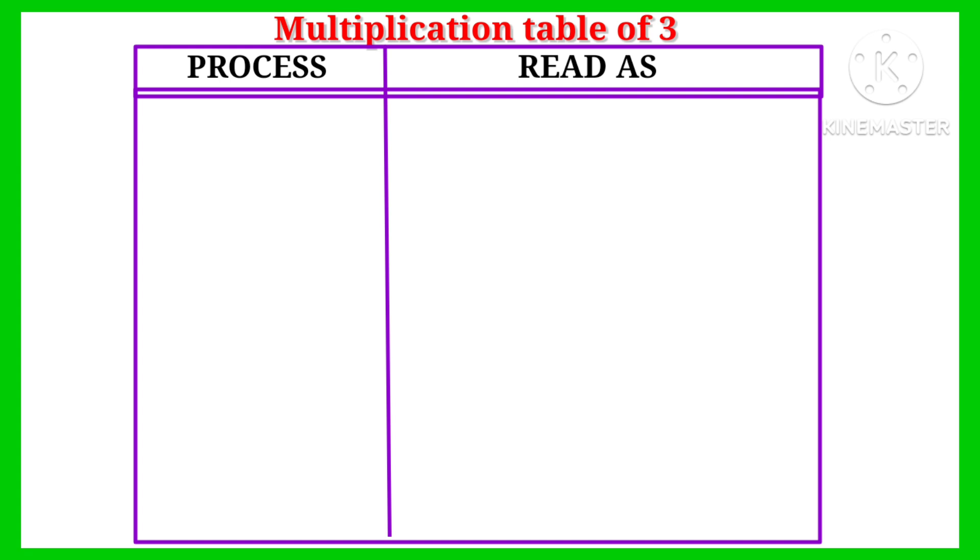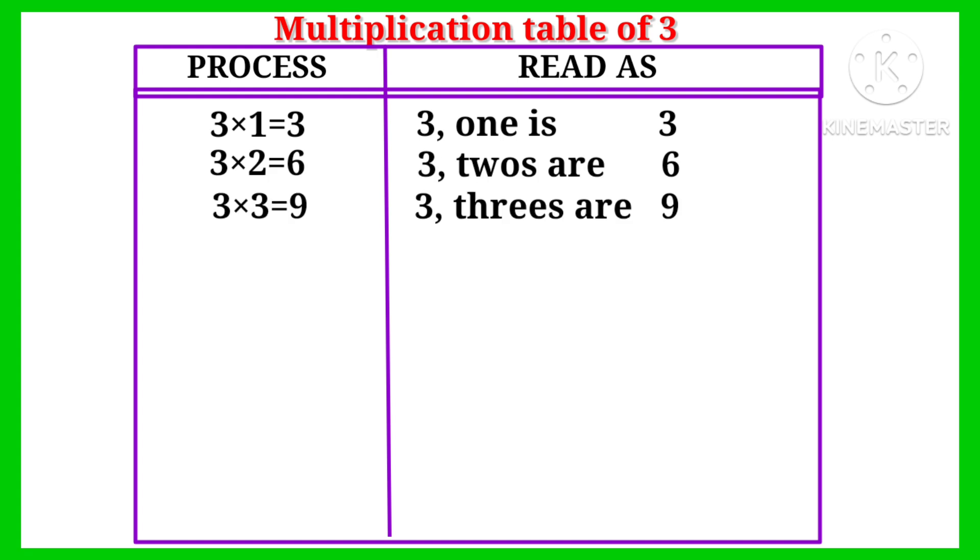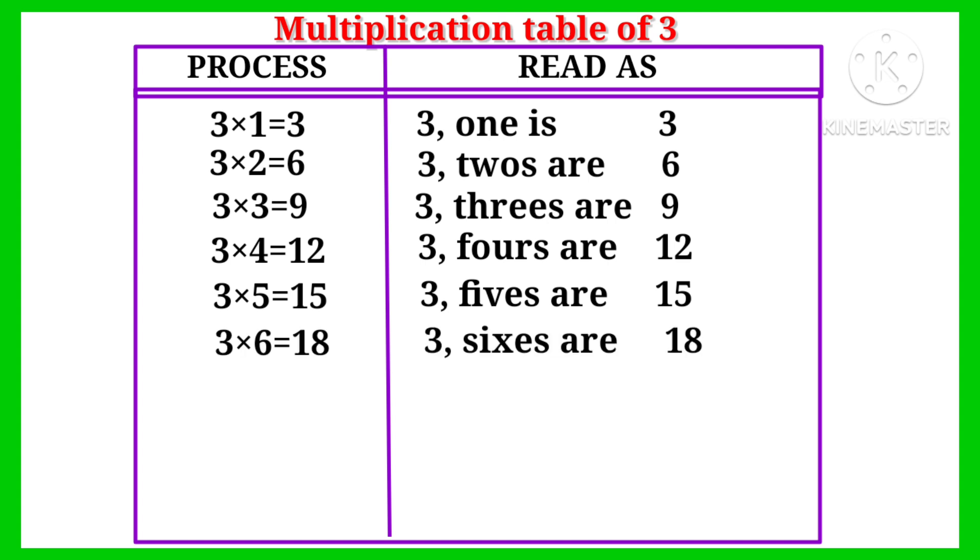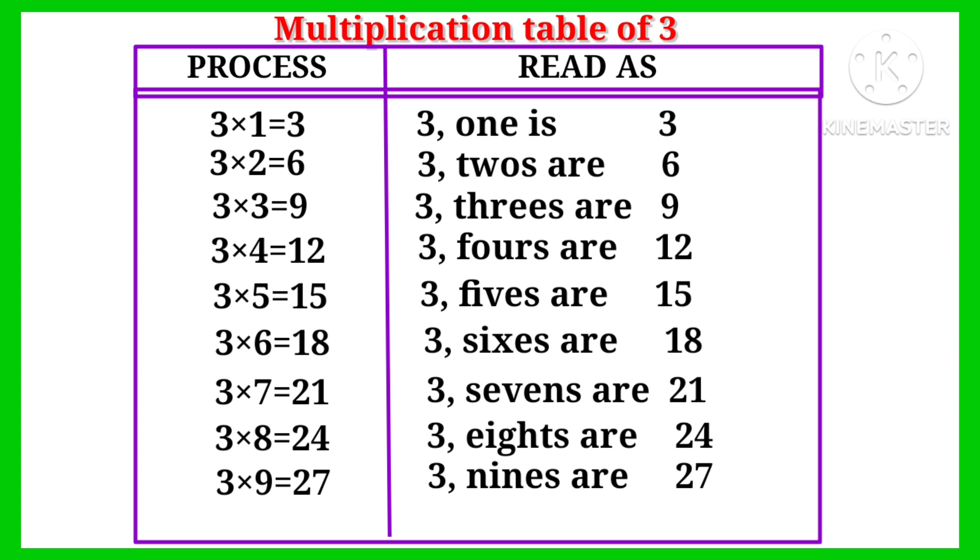Multiplication table of three: three one is three, three twos are six, three threes are nine, three fours are twelve, three fives are fifteen, three sixes are eighteen, three sevens are twenty-one, three eights are twenty-four, three nines are twenty-seven, three tens are thirty.